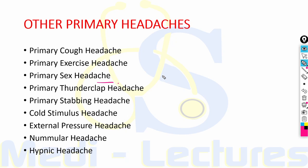Primary thunderclap headache can be seen with subarachnoid hemorrhage from sentinel bleed of intracranial aneurysm, arterial dissection or cerebral venous thrombosis. Primary stabbing headache has stabbing pain confined to the head or face, lasting one second to many seconds, either single stab or series of stabs, usually absent cranial autonomic features. Treatment is indomethacin 25 to 75 mg TDS.